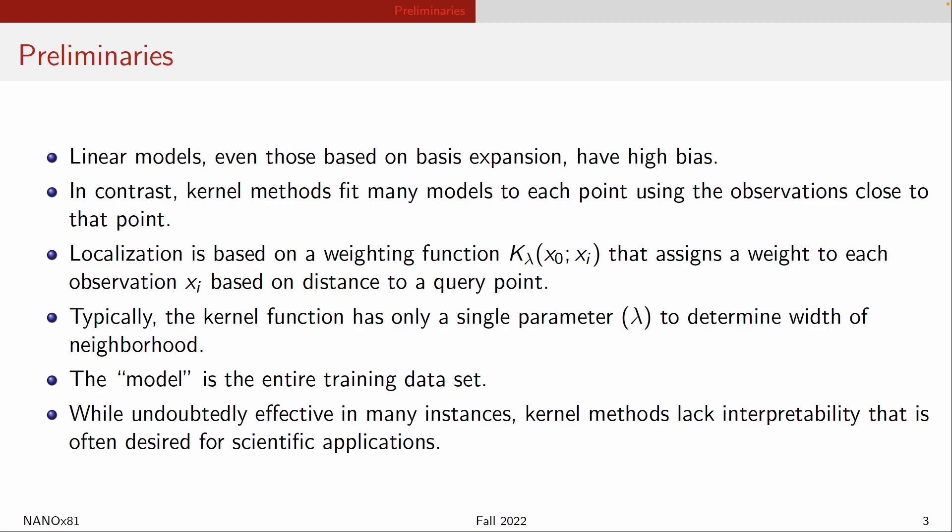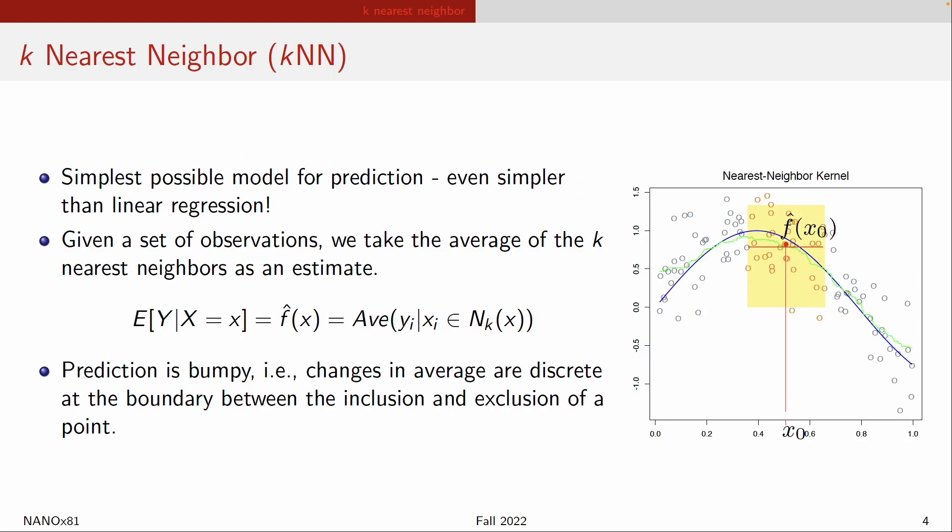Let me start with the simplest kernel method of all: k-nearest neighbor. I want to distinguish this from k-means — k-nearest neighbors and k-means are completely different things. K-means is for unsupervised learning, while k-nearest neighbor is actually a form of supervised learning. K-nearest neighbor is just that you are making a prediction based on a kernel.